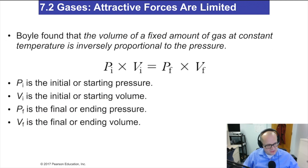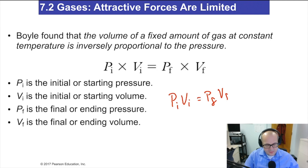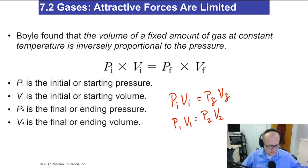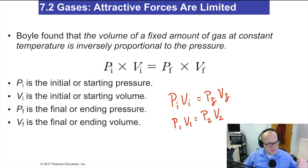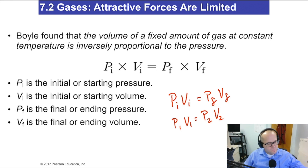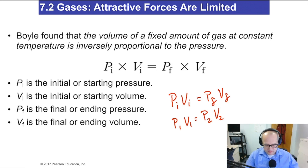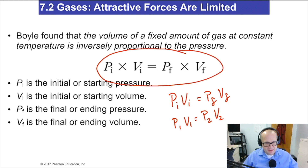Of course, like everything in chemistry, there's a formula for that: Pi × Vi = Pf × Vf — or as I usually write it, P1V1 = P2V2, where 1 is initial and 2 is final. That's how it'll appear on your formula sheet for the exam as well. This relationship is Boyle's Law.